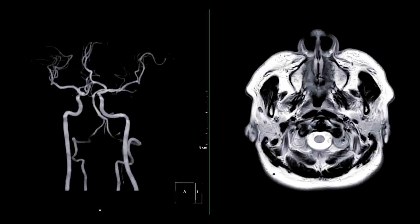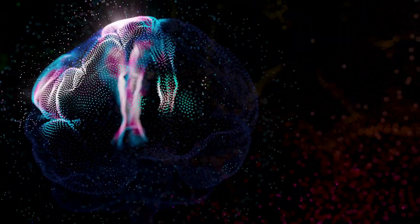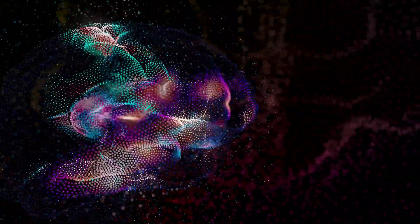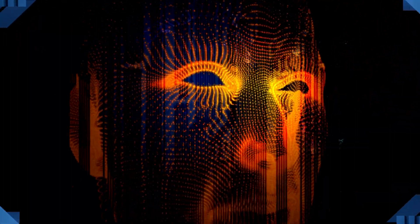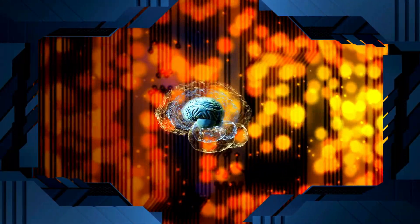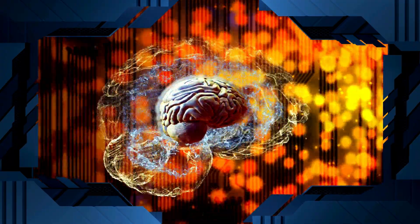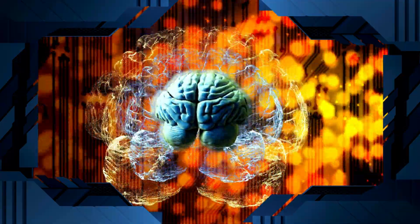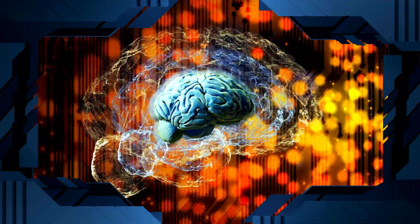The brain's prefrontal cortex, often referred to as the seat of executive functions, is vital in the evaluation of moral and ethical considerations. This region allows us to reason, make decisions, and regulate our impulses. When determining right from wrong, the prefrontal cortex integrates information from various brain areas, including the amygdala and hippocampus.